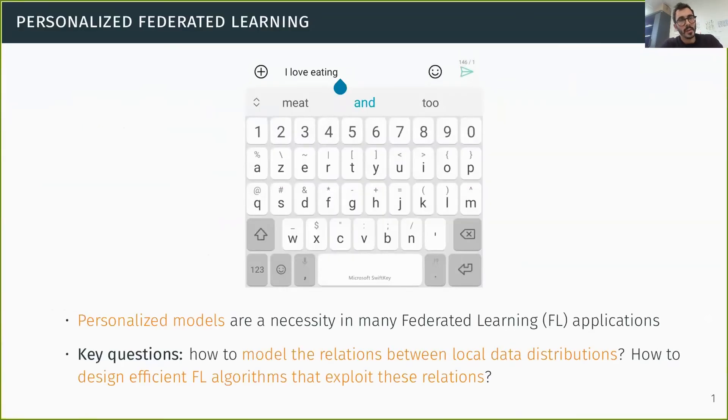This work is on personalized federated learning, where the goal is essentially to learn models that are adapted to each user. And we know that this is a necessity in many applications, such as the one illustrated here, which is next word prediction. Clearly, you have to adapt the model of each client to its preferences and habits. So personalized federated learning raises several questions, such as how to model the relations between the local data distributions of all users, and how to design efficient federated learning algorithms that exploit these relations.